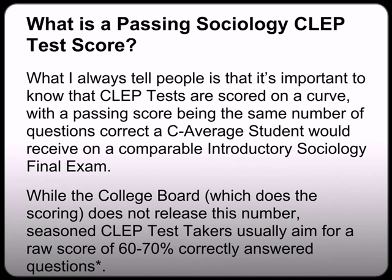On the actual exam, you should try your best to get as many correct as possible. But when doing your practice tests with Peterson's or REA, that 60 to 70% mark is a good gauge of your readiness. A special note: some people say that because of the ease of the Sociology exam, the curve is higher than normal, meaning you might receive a lower score than expected. But most colleges only grade on a pass-fail basis, so that won't make a difference.